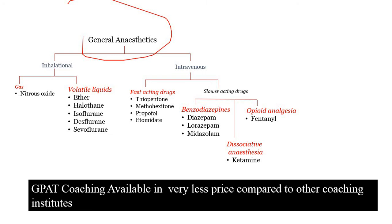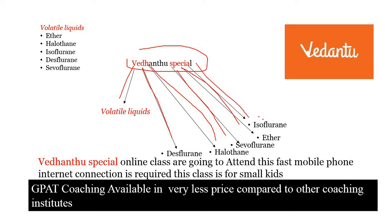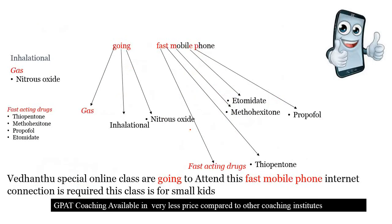In the word VEDANTHU SPECIAL, V indicates Volatile liquids, D indicates Desflurane, H indicates Halothane, S indicates Sevoflurane, E indicating Ether, and I indicating Isoflurane. So isoflurane, ether, sevoflurane, halothane, and desflurane are the volatile liquids used for general anesthesia.